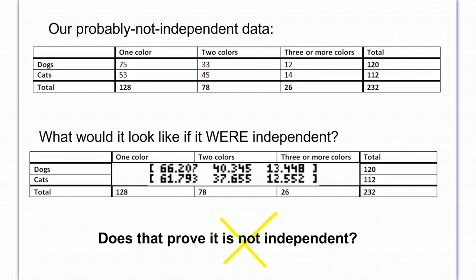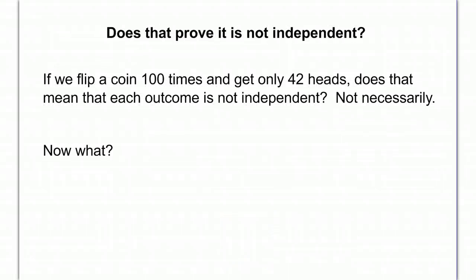But if that's your immediate conclusion as it was for me, then think about this situation. If we flip a coin 100 times and only get 42 heads, does that mean that each outcome is not independent? Because we expect 50 heads when we flip a coin 100 times. But if we get something different, does that mean that they're not independent? Not necessarily. I mean, any time you're flipping a coin, there's going to be randomness involved, so sometimes it's going to be a little high, sometimes a little low. And 42 seems a little bit low, but that's very possible. It definitely could happen.